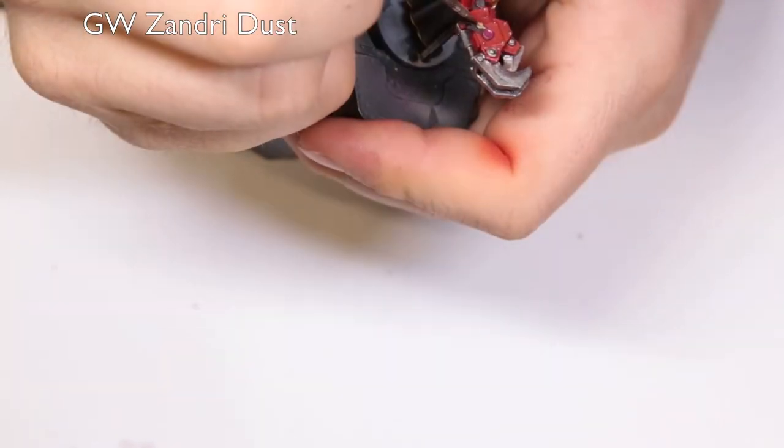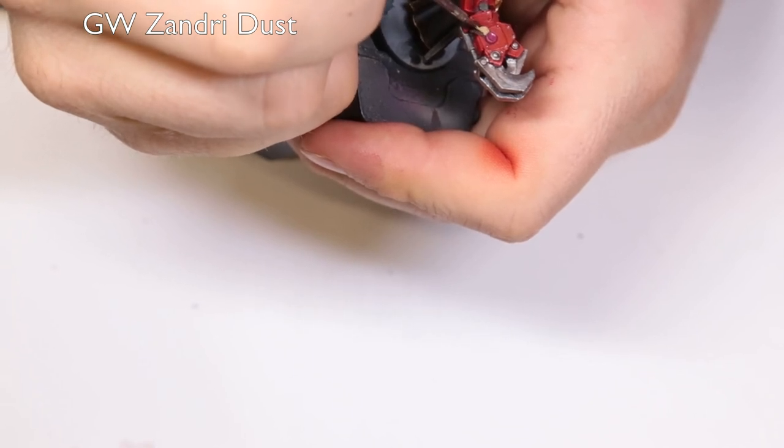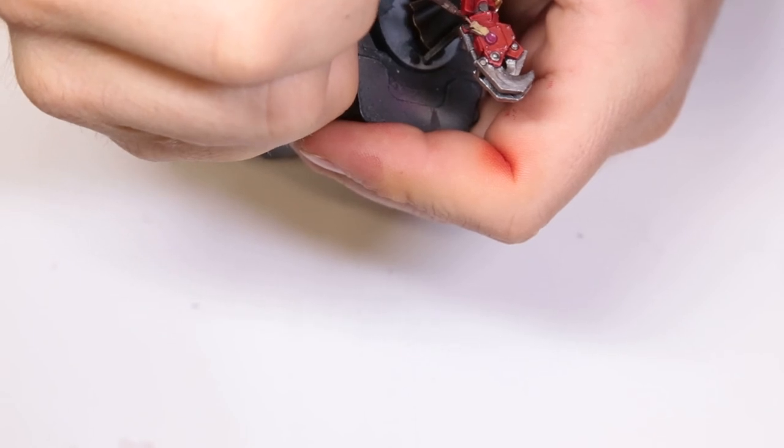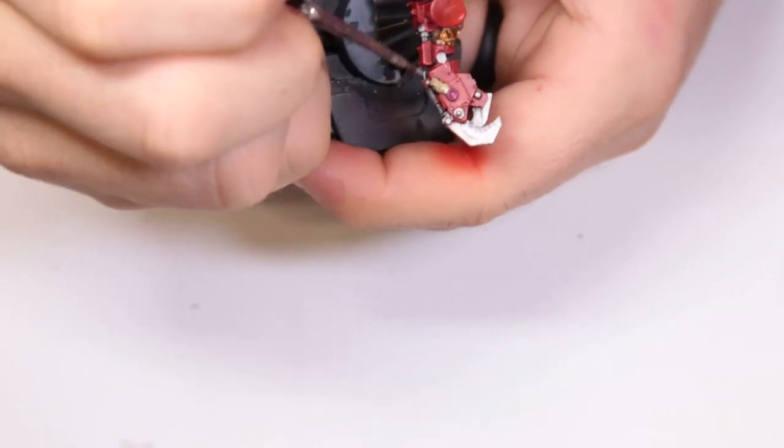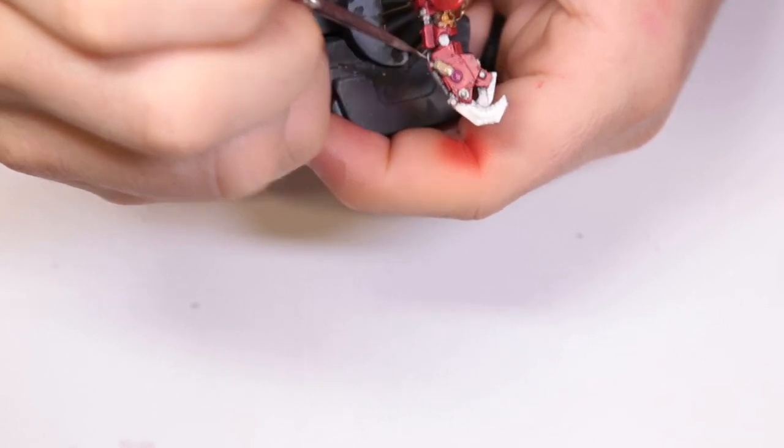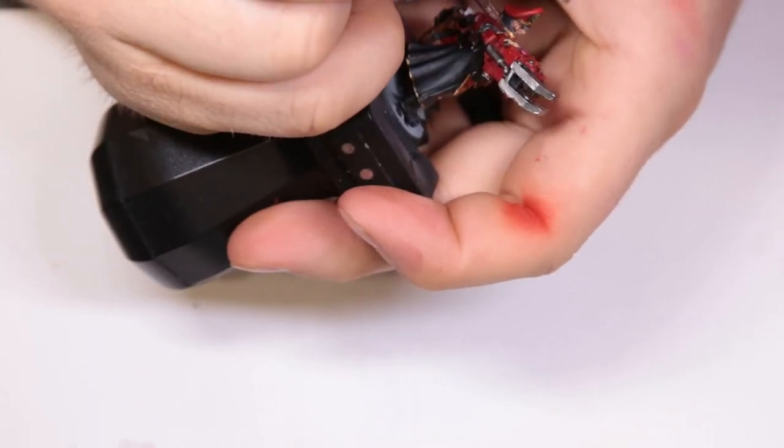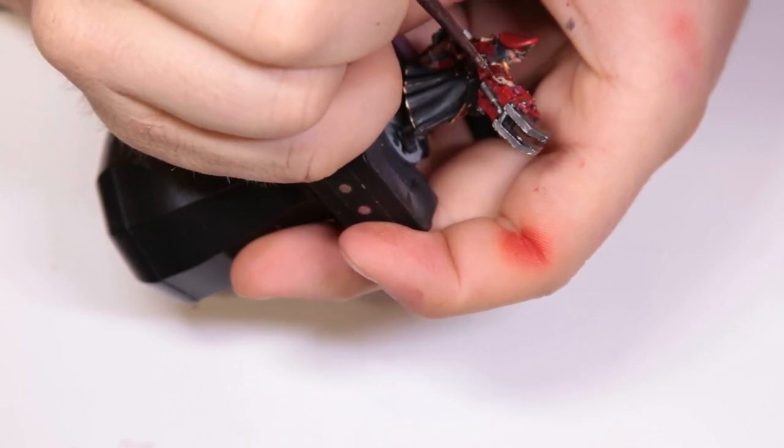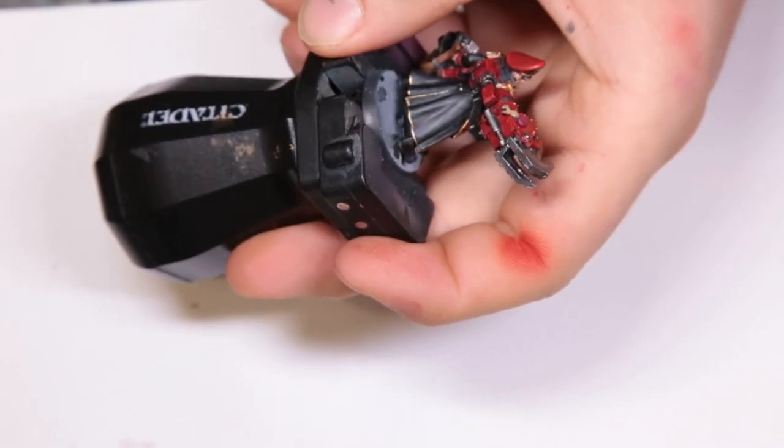Finally, Xandri Dust. We just go ahead and lay that down over the Purity Seal. We come through later with some Seraphim Sepia and then Screaming Skull for our final highlight colors. Again, the footage, I think I ran out of memory space on the card. Like I said, I'm still learning. I'm still trying to produce better quality content for you all. It's just part of the game.